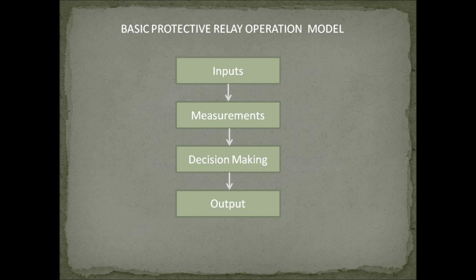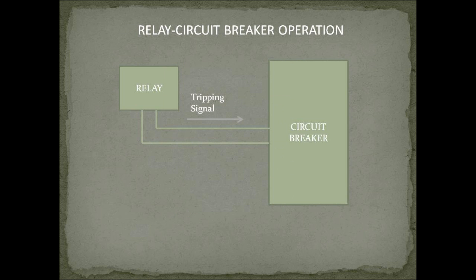Input is your voltage, current, or frequency. The relay measures the input and determines if it is under normal value. Under normal conditions, the output of a relay is zero. If the system detects a fault, the output of the relay directs the circuit breaker to perform the switching operation. A tripping signal generated in DC volts on the relay is transferred to the circuit breakers, which then execute the orders from the relays.